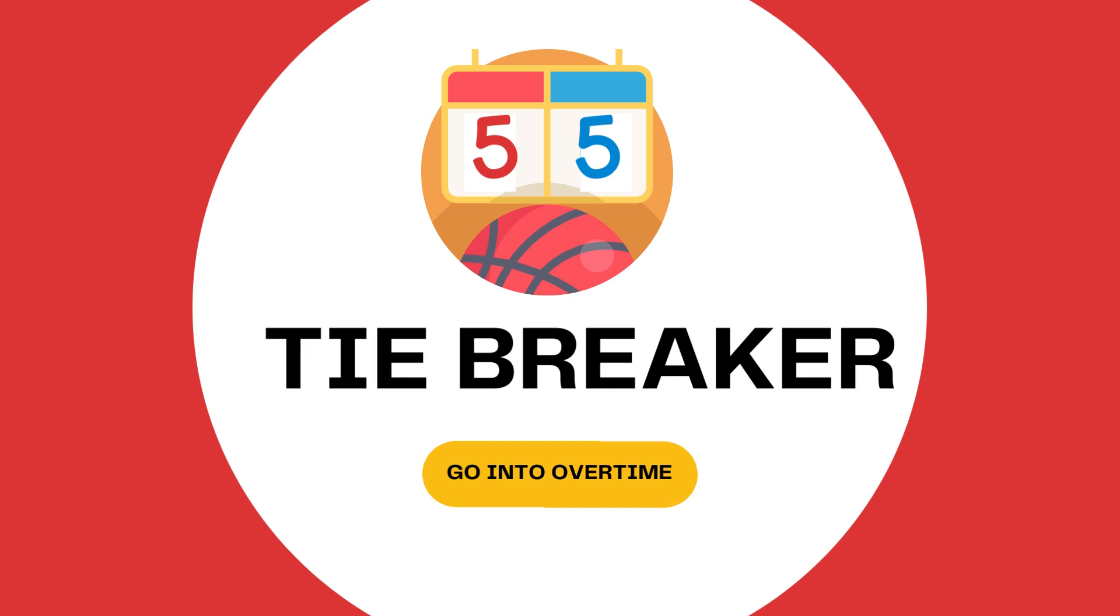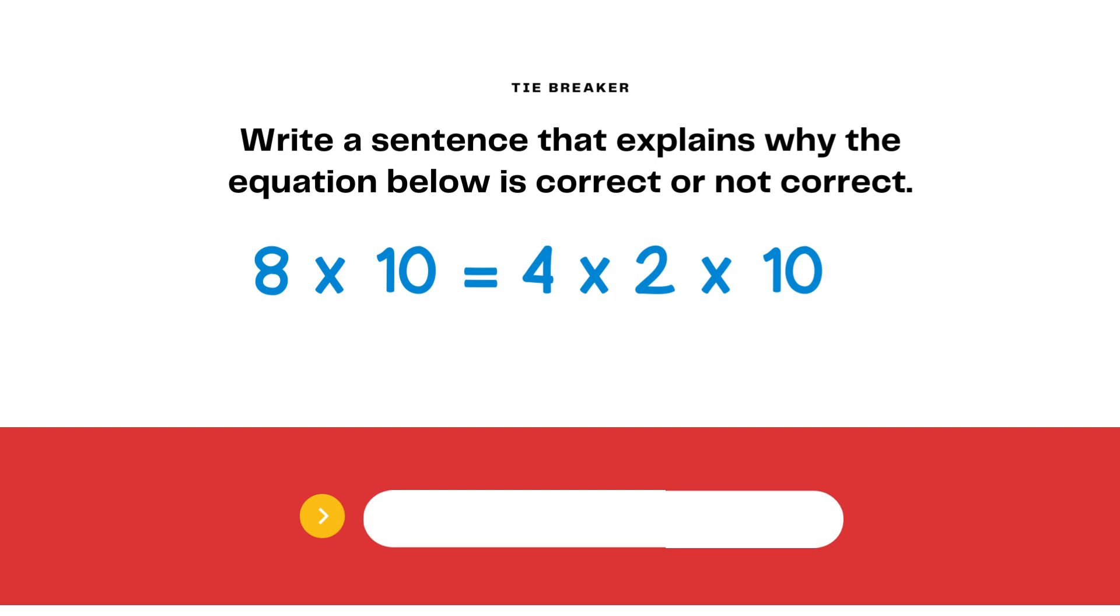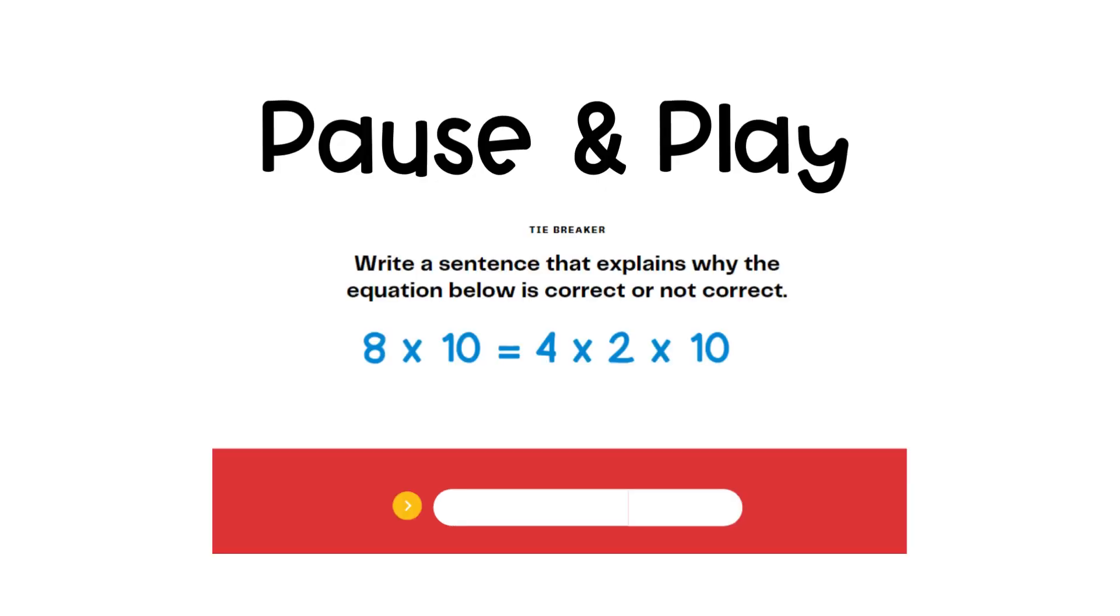Next, total your points. If there's a tie, let's play the tiebreaker. Go into overtime. Here's your tiebreaker question. Write a sentence that explains why the equation below is correct or not correct. 8 times 10 equals 4 times 2 times 10. Pause here, and then press play when you have your answers ready.